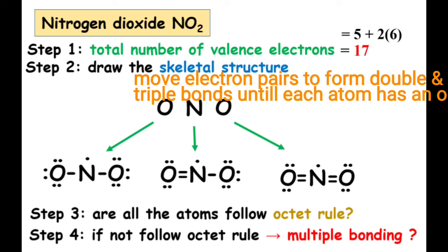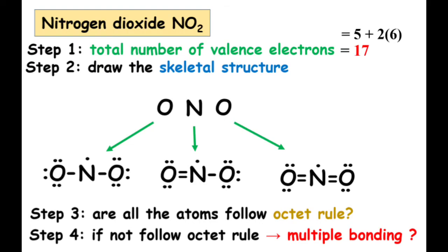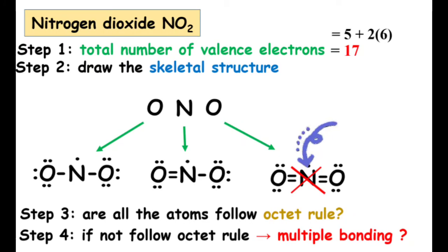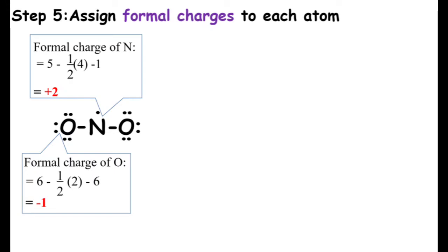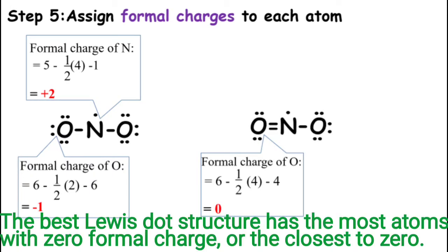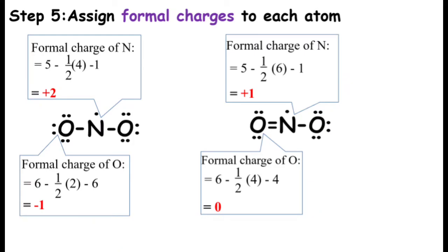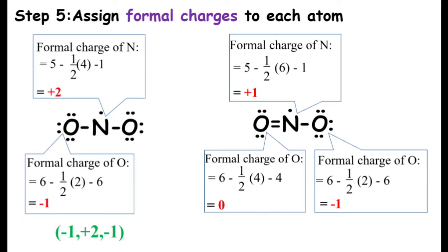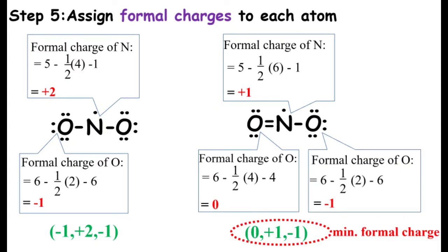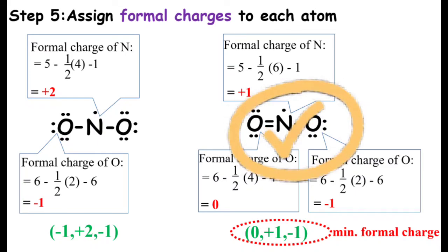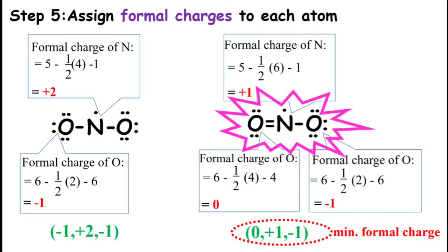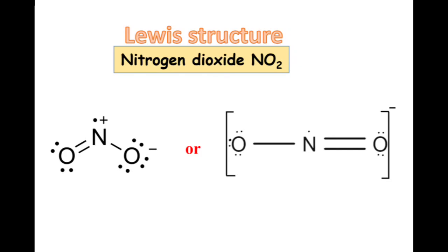So which is the most stable Lewis structure of nitrogen dioxide? The electron count on the nitrogen atom in this diagram is more than 8, therefore this is not the correct Lewis structure. Now we need to assign formal charges to each atom. Always bear in mind that the best Lewis dot structure has the most atoms with zero formal charge or the closest to zero. From the calculations, this structure has the best Lewis dot structure, because it has the most atoms with zero formal charge or the closest to zero. Therefore, this is the Lewis structure of nitrogen dioxide.